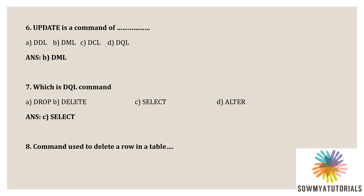Next question: which command is used to delete a row in a table? Options are: option A, alter; option B, delete; option C, drop; option D, all of the above. The correct option is option B, delete. Delete is a DML command which is used to delete a row in a table.